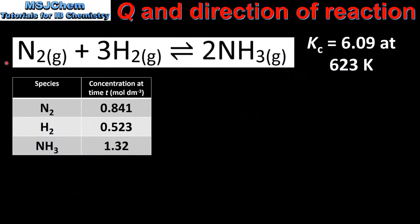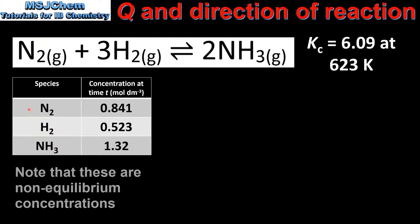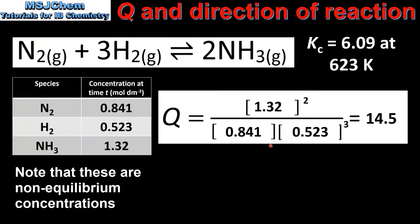Next we will calculate the value of the reaction quotient Q for the same reaction at a different point in time. So once again in the table we have the concentrations of the reactants and products at time t. When we input these values into the expression for the reaction quotient Q, we get a value of 14.5.